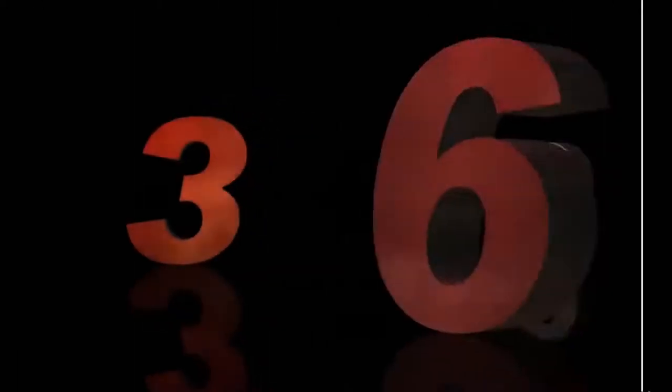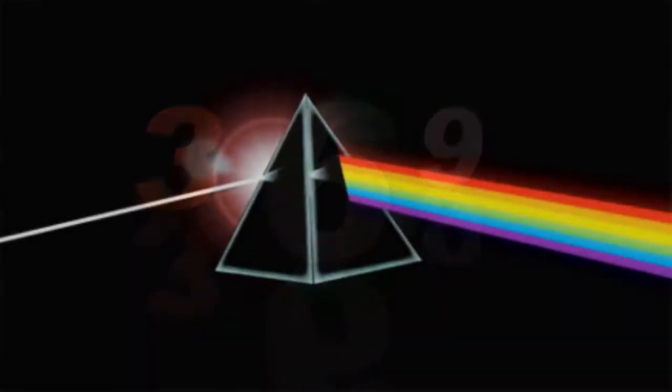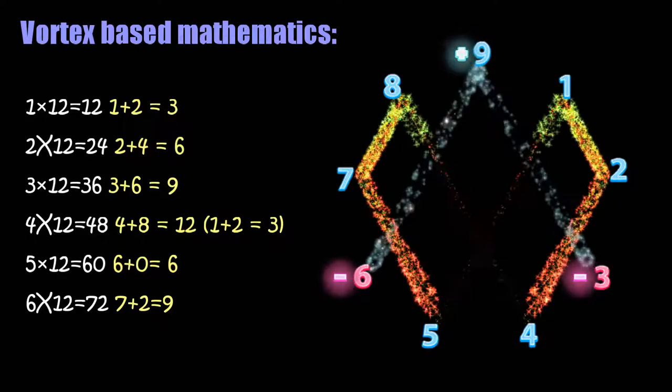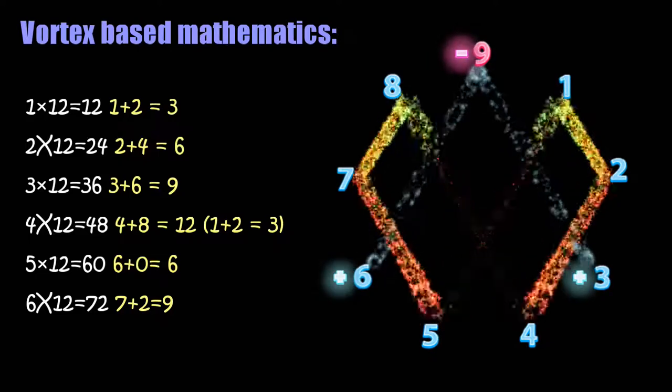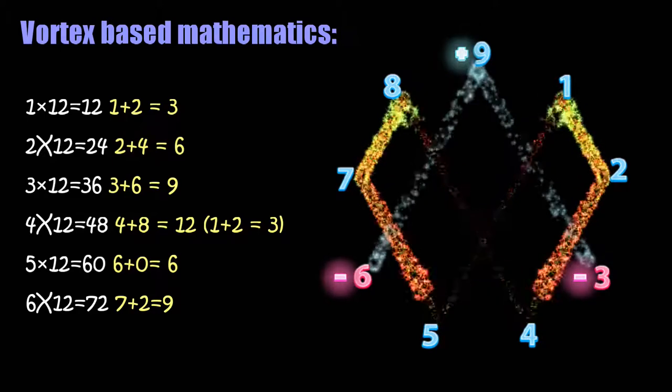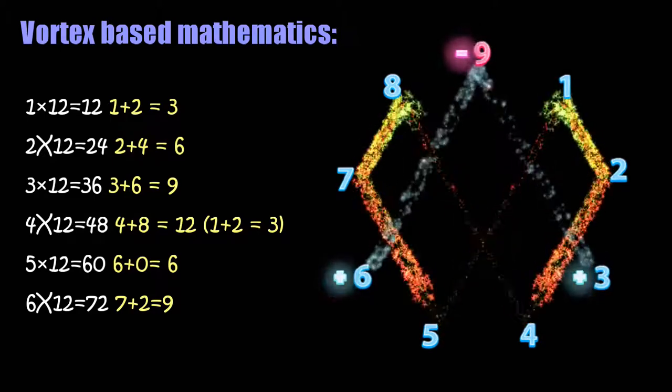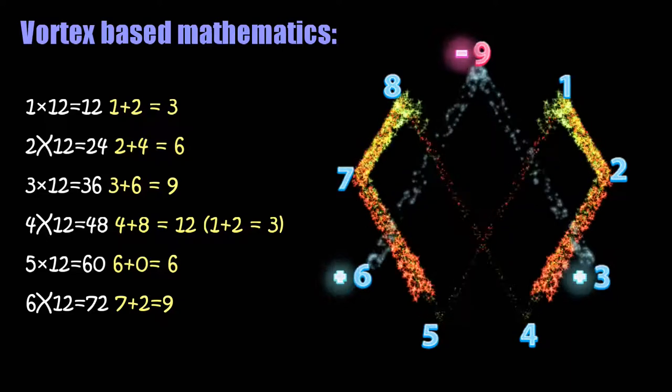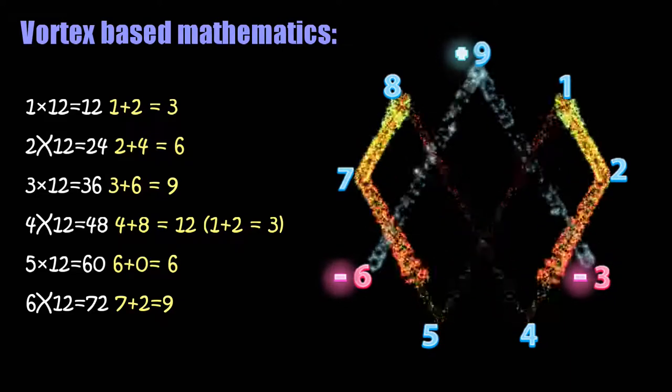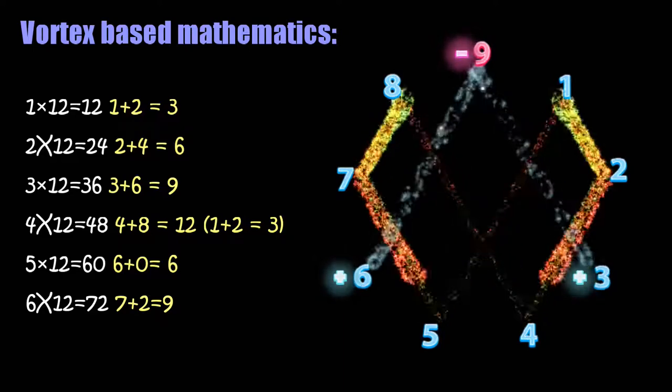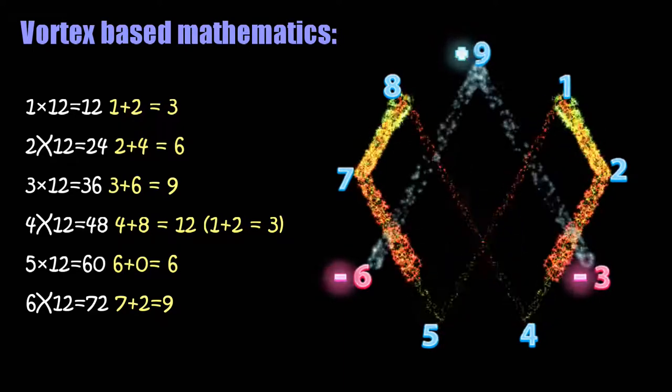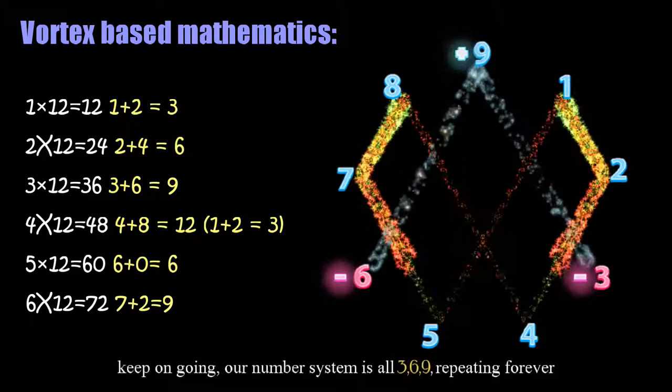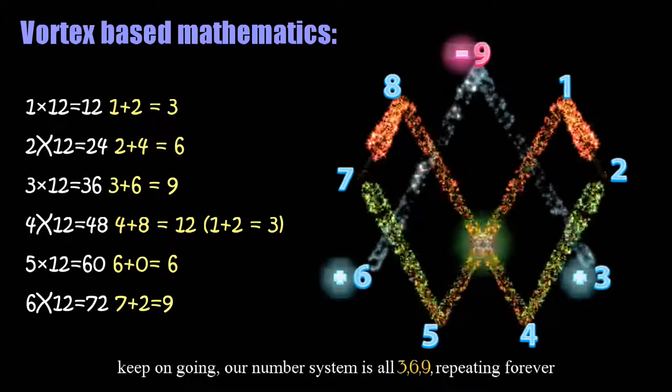They are all related. They are perfect musical overtones of one another. Now check this out using vortex based mathematics: 1 times 12 equals 12, 1 plus 2 equals 3. 2 times 12 equals 24, 2 plus 4 equals 6. 3 times 12 equals 36, 3 plus 6 equals 9. 4 times 12 equals 48, 4 plus 8 equals 12, 1 plus 2 equals 3. 5 times 12 equals 60, 6 plus 0 equals 6. 6 times 12 equals 72, 7 plus 2 equals 9. Now if you keep on going, you'll notice that our number system is all 3, 6, and 9, repeating forever.